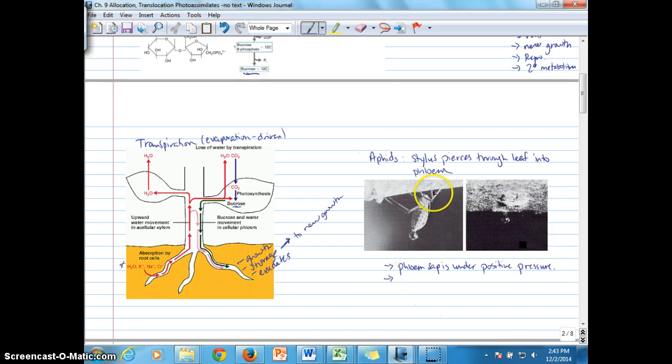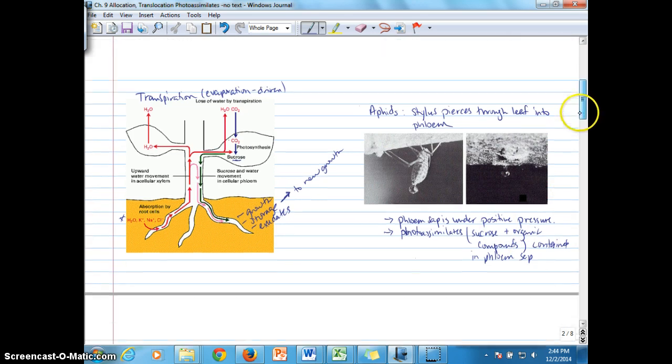And then we also can take this phloem sap. They've cut the aphid off at the stylus here and left it sort of attached to the leaf. And you can see the phloem sap exuding here. So, then they're taking this phloem sap and analyzing the contents and have found that photo-assimilates, such as sucrose and other organic compounds, are found as components of this sap. So, they're contained in the phloem sap.